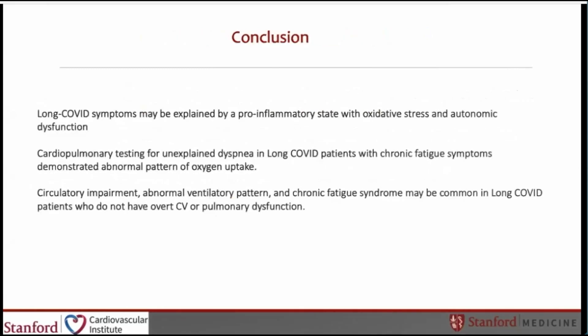In conclusion, three major findings can be reported. First, long COVID symptoms may be explained by a pro-inflammatory state, oxidative stress, and autonomic dysfunction. Second, cardiopulmonary testing for unexplained dyspnea in long COVID patients with chronic fatigue symptoms demonstrated abnormal patterns of oxygen uptake. Finally, circulatory impairment, abnormal ventilatory pattern, and chronic fatigue syndrome may be common in long COVID patients who do not have overt cardiovascular or pulmonary dysfunction.